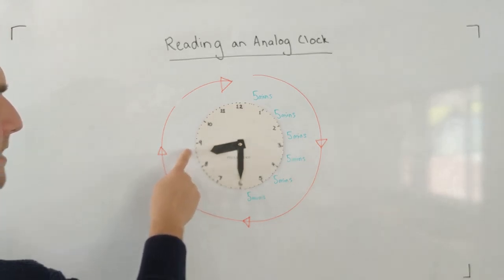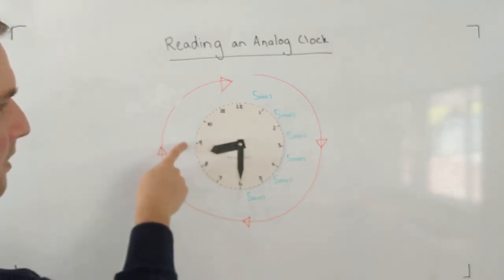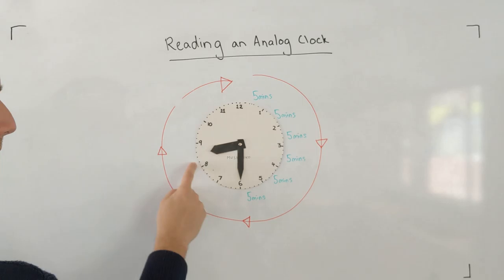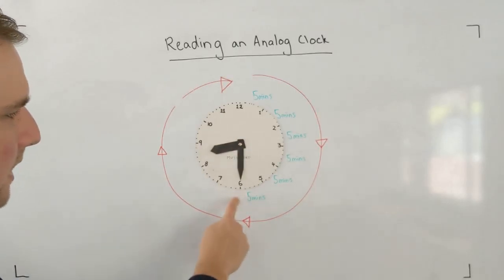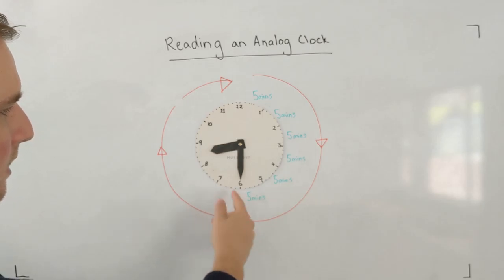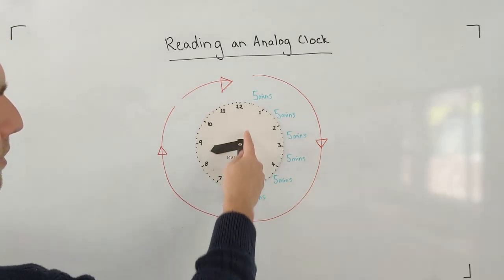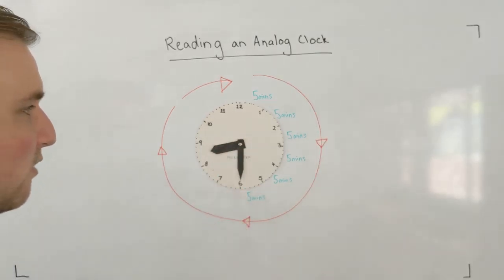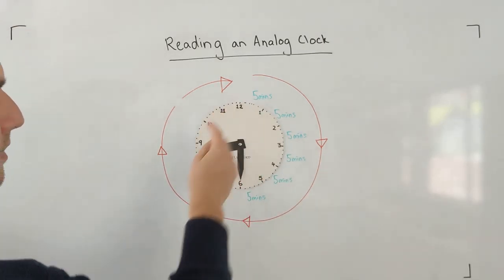So we know that it's 8 something o'clock. Not yet 9 o'clock. 8 something o'clock. The minute hand has made its way all the way down to the 6. We know that that is 30 minutes past or half past. It's halfway around the clock.